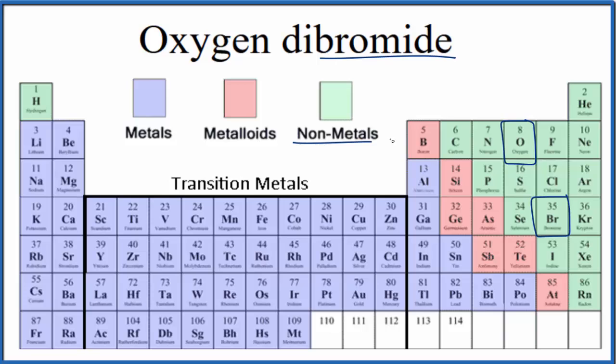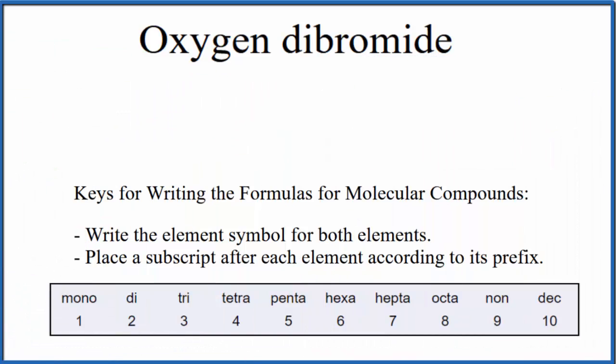When we have two nonmetals, it's a molecular, also called a covalent compound. And we'll use these rules to write the formula.